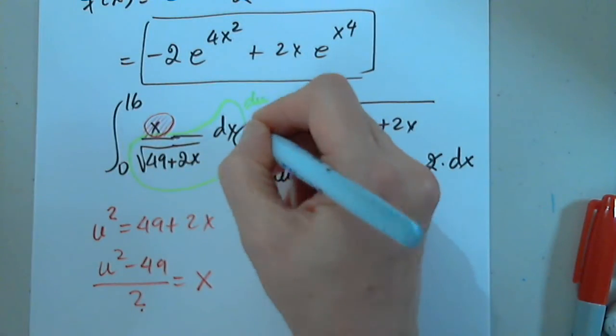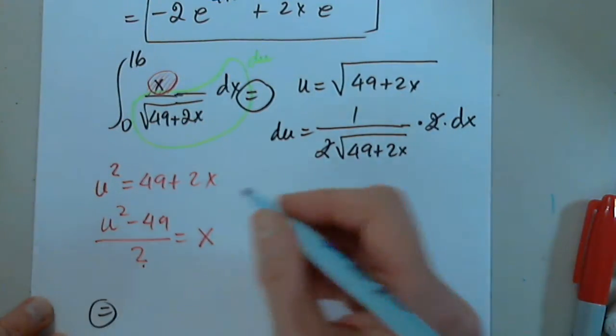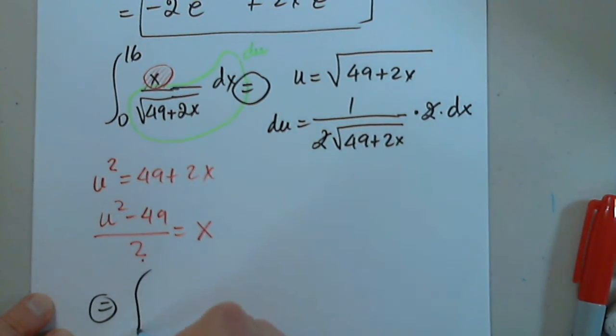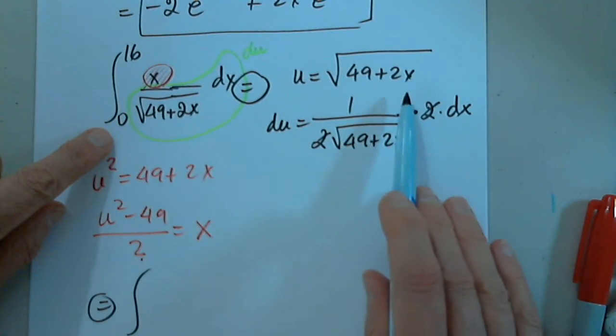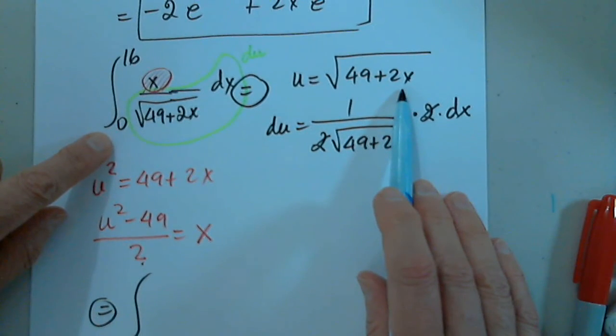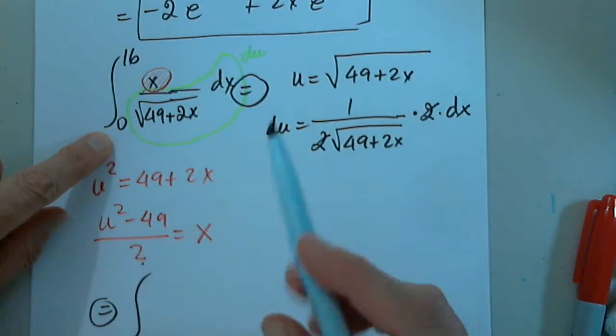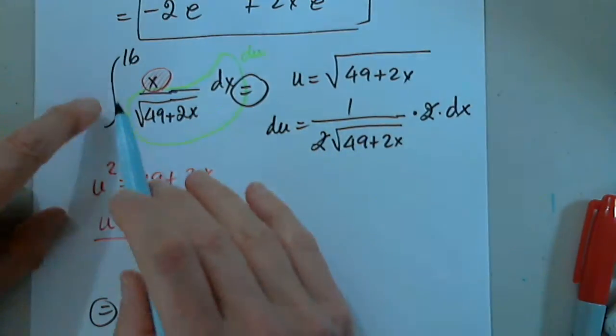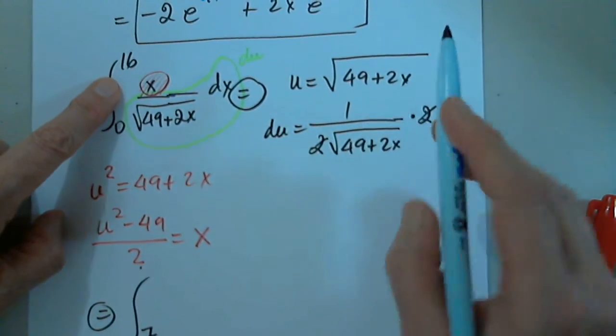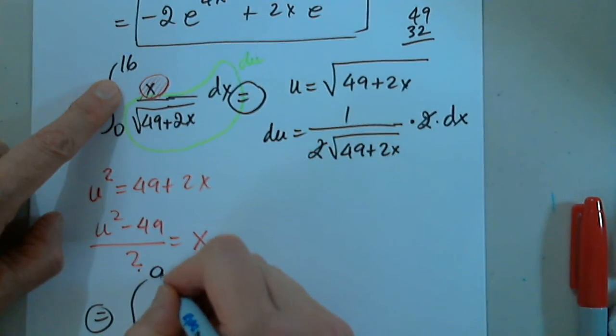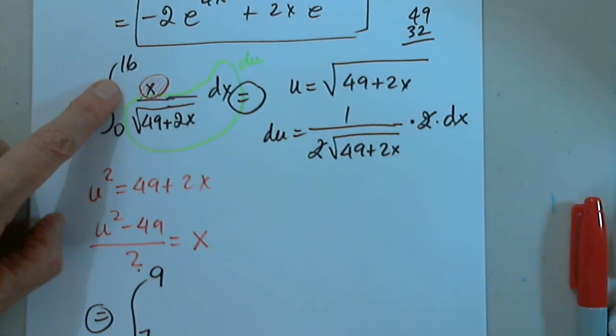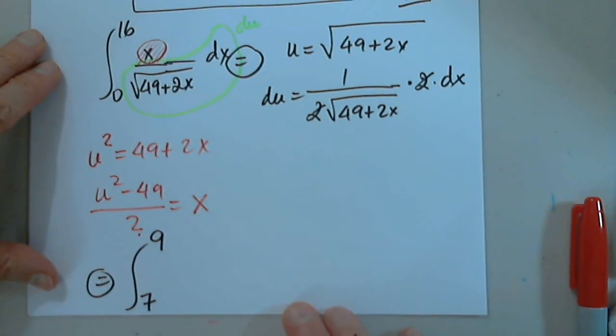So from here, I'm going to put a circle because I wrote so many different things. Do not copy the limits of integration. Careful. When I plug in 0 for x, the square root of 49 is 7. When I plug in 16, that's 49 plus 32, which is 81, so the square root of 81 would be 9. Now I can continue.